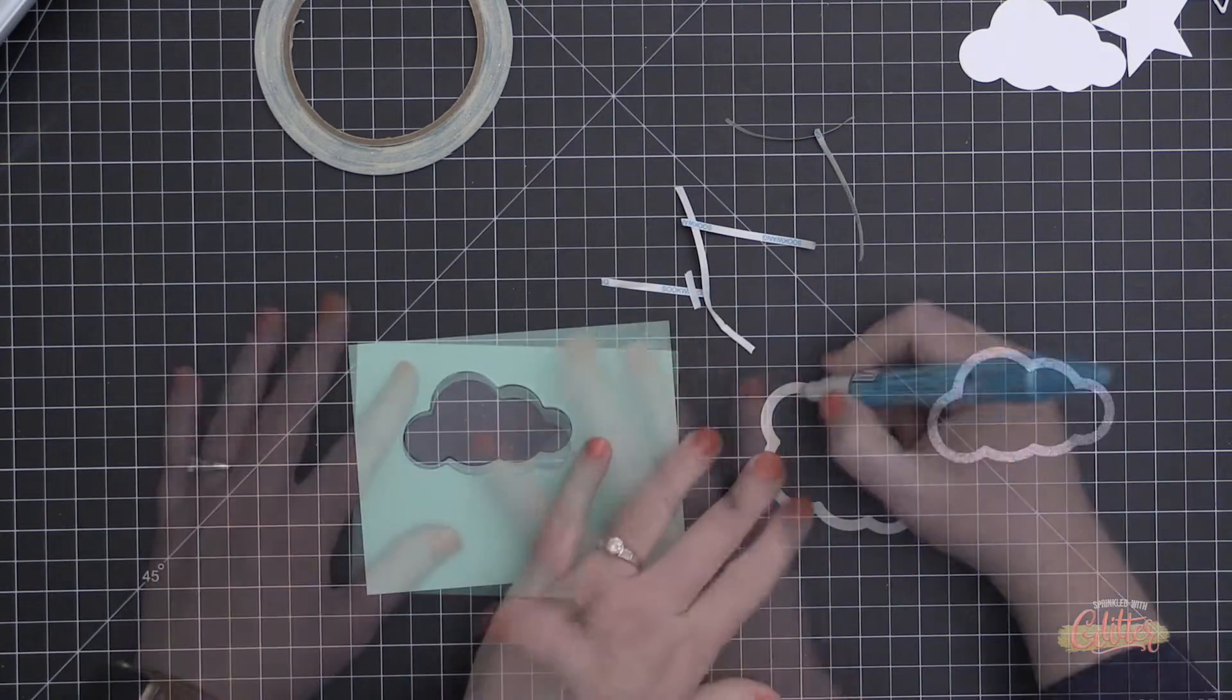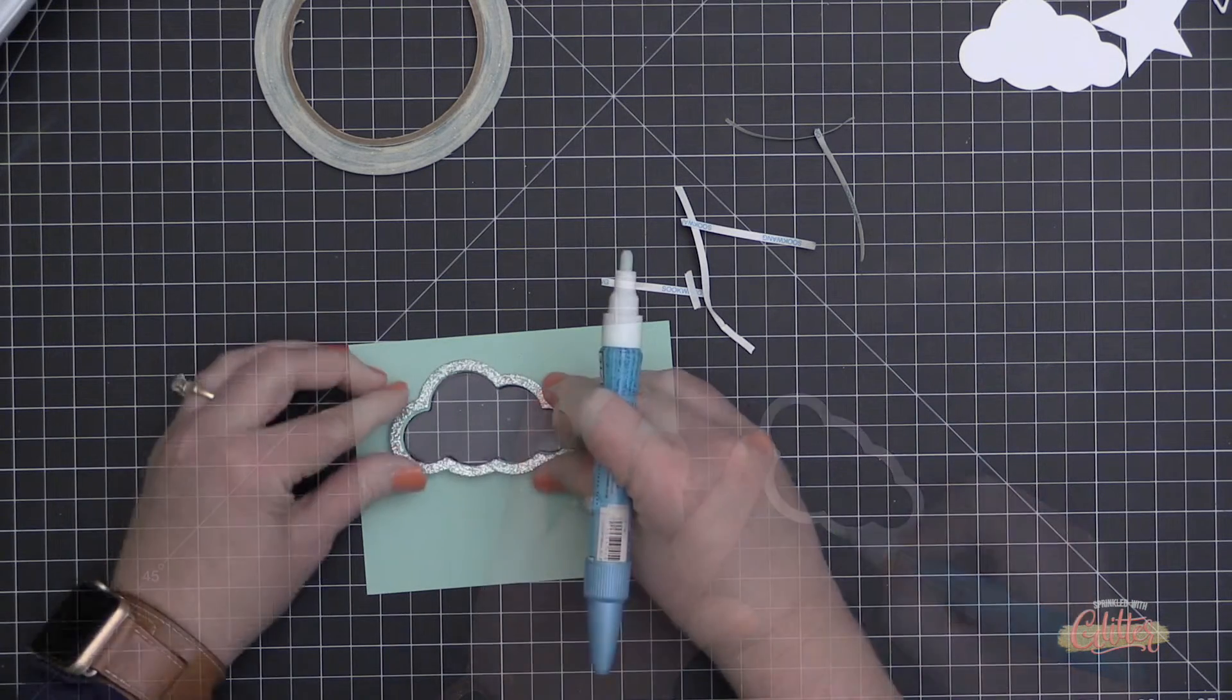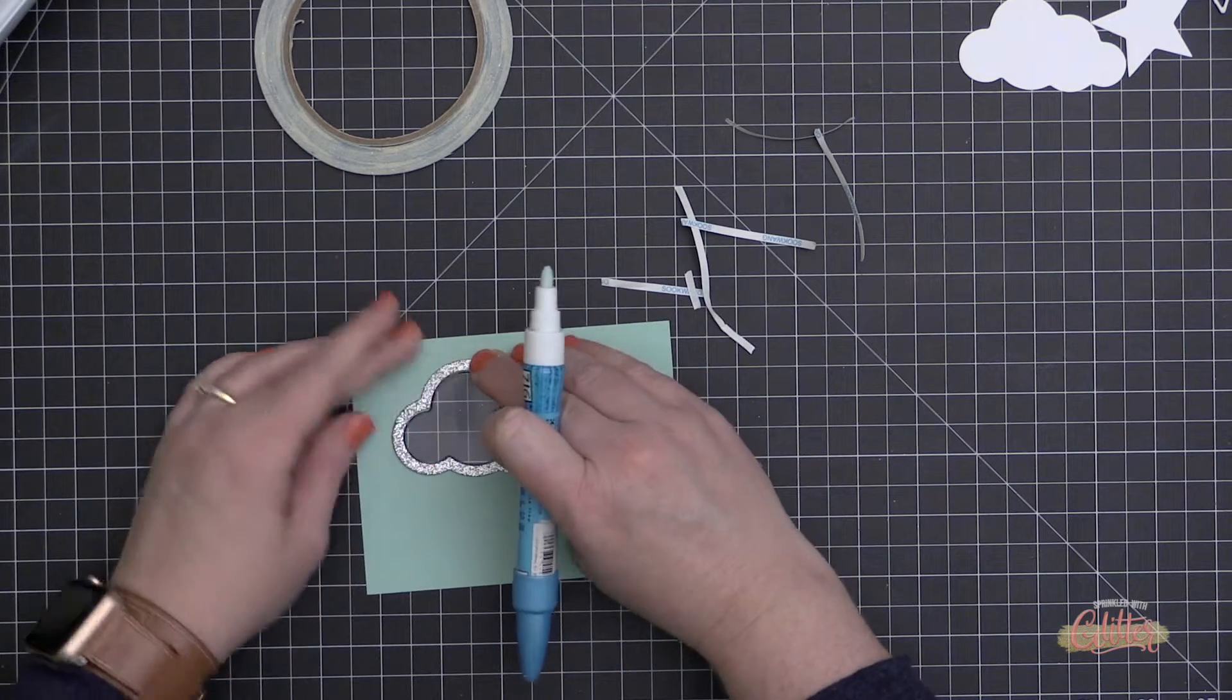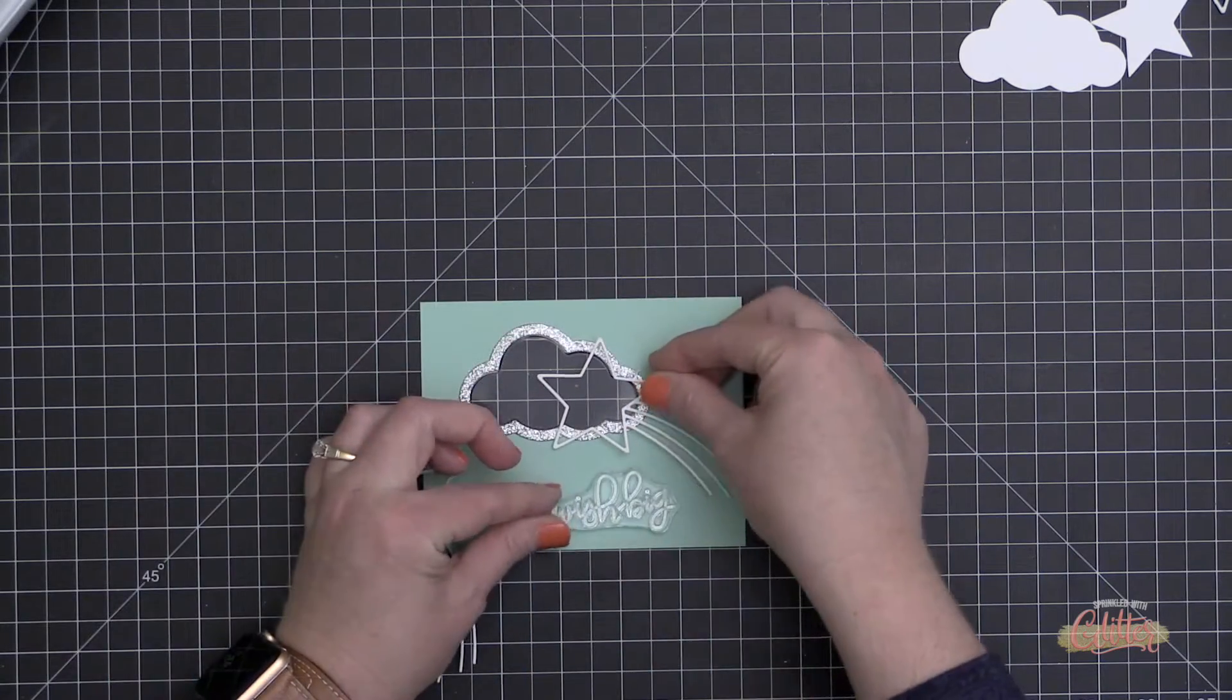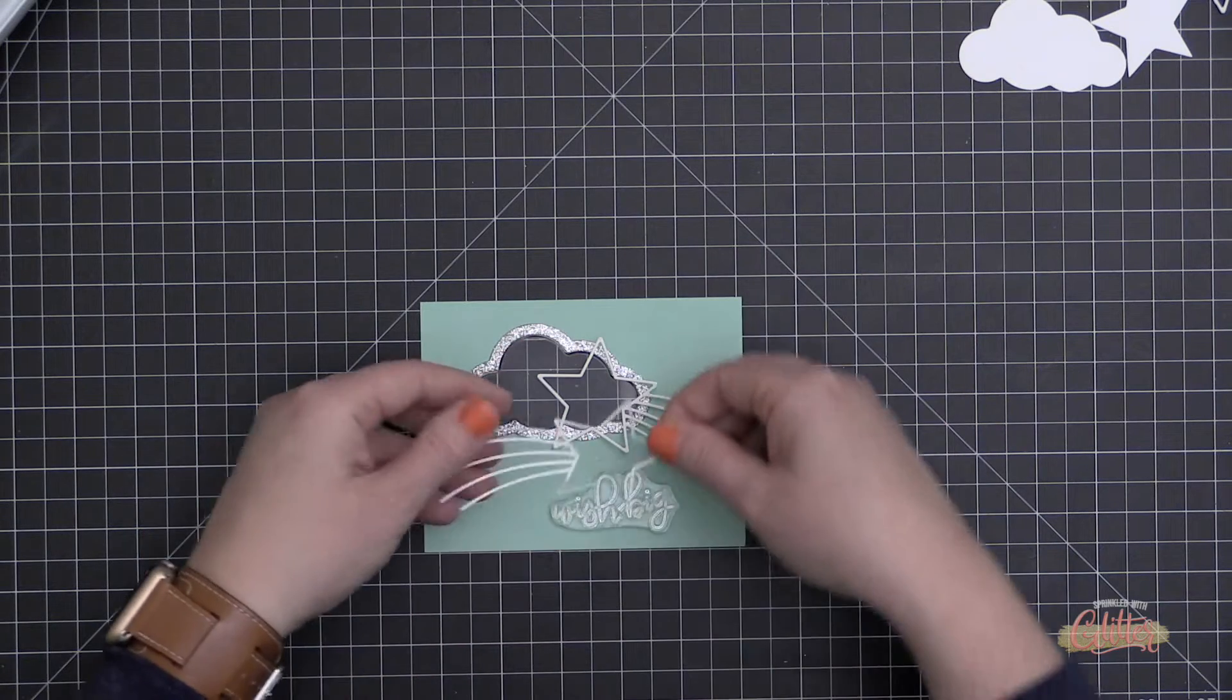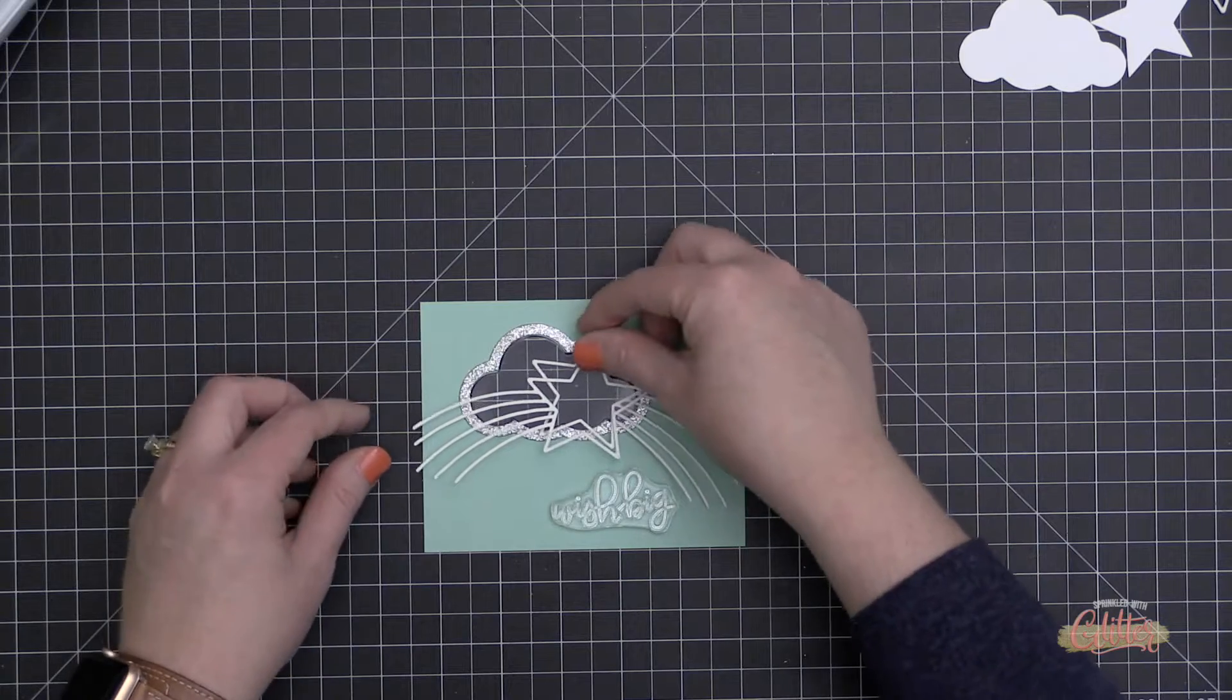I placed my little shaker pouch into that window and it fits perfectly. Now I'm using my Zig Two-Way Glue Pen and I'm putting that on the back of this frame, and I'm going to nestle that around that shaker window and it fits perfectly.